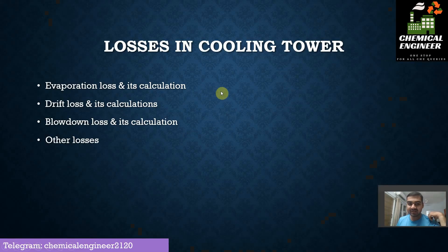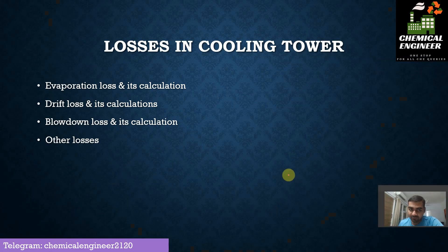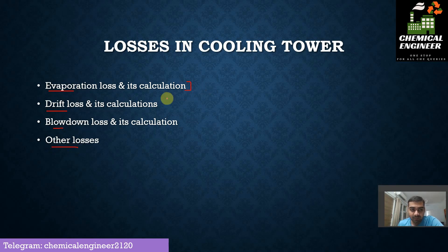Hello everyone, welcome to the channel Chemical Engineer. I am Sahil Yadav, and in this video we are going to see about different types of losses in a cooling tower. We are going to design a full cooling tower by the end of this playlist. Mainly there are four types of losses: first, evaporation loss; second, drift loss; third, blowdown loss; and fourth, miscellaneous losses due to operational issues.